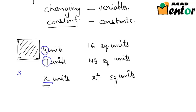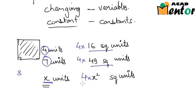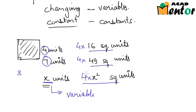What if we had to find the area of 4 such squares? In that case, the area would be 4 × 16 square units in the first case, 4 × 49 square units in the second case, and 4x² square units when the side was x units. Here the number 4 is constant in all cases — it does not change. So x is a variable, while 4 is a constant.